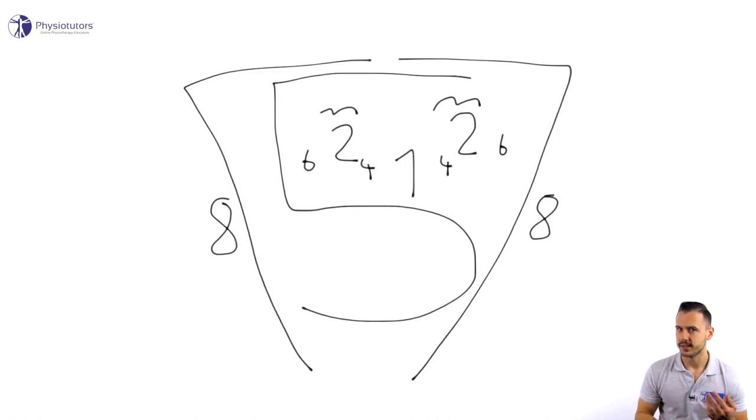Before we can include cranial nerves 9 and 10, we will have to draw a tongue sticking out of the mouth. Cranial nerve 9, the glossopharyngeal nerve, and cranial nerve 10, the vagus nerve, are connected to taste, swallowing and cough.